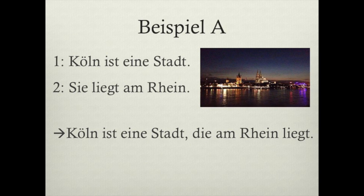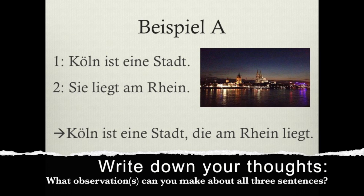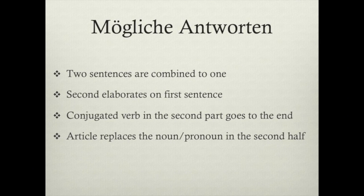We start out with an example right away. Beispiel A — we have three sentences: First, 'Köln ist eine Stadt.' Second, 'Sie liegt am Rhein.' And last, 'Köln ist eine Stadt, die am Rhein liegt.' Write down any thoughts or observations you can make about all three sentences. Some possible answers: two sentences were combined into one in the last sentence; the second part elaborates on the first; the conjugated verb is kicked to the end; and an article connects the two sentences.